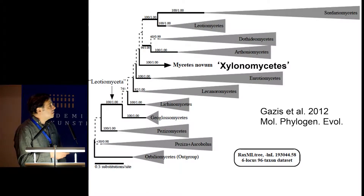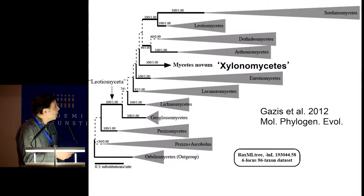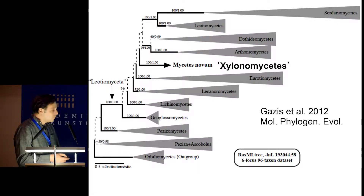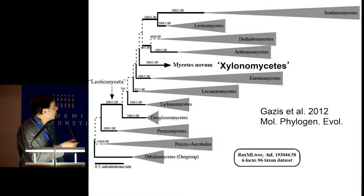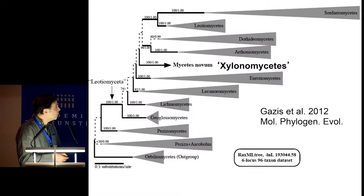For example, in 2012, Gazis et al. found a new class — the Xylonomycetes — a new class of fungi. It took about six loci to determine that they were really within the Leotiomyceta, but clearly it was something separate from all the other classes known so far.